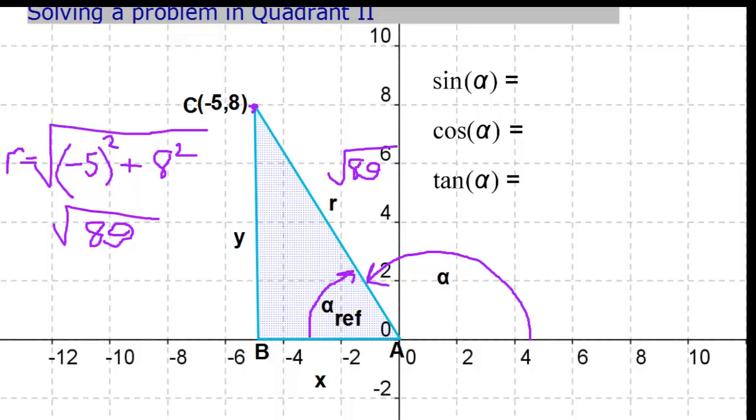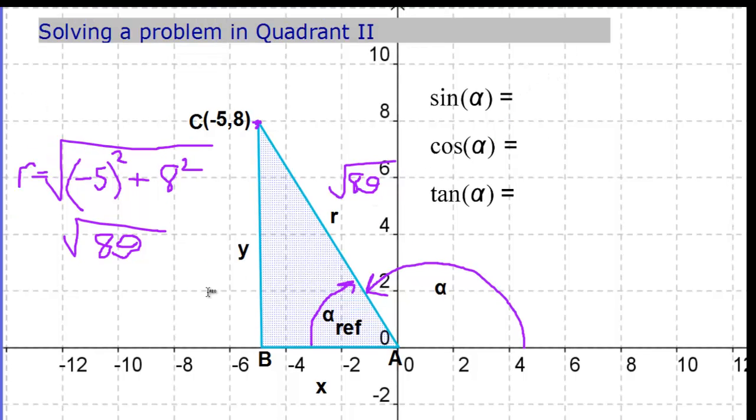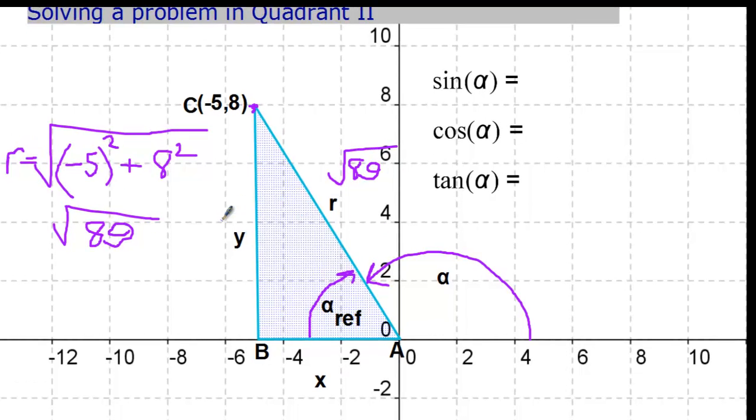So the sine of alpha, then, is going to be y over r. And y, in this case, is 8. It's always good to label this triangle. x is negative 5. So if we want to find y over r, it's going to be 8 over the square root of 89. If we want to find cosine, that's adjacent over hypotenuse, x over r. So that's going to be negative 5 over the square root of 89.